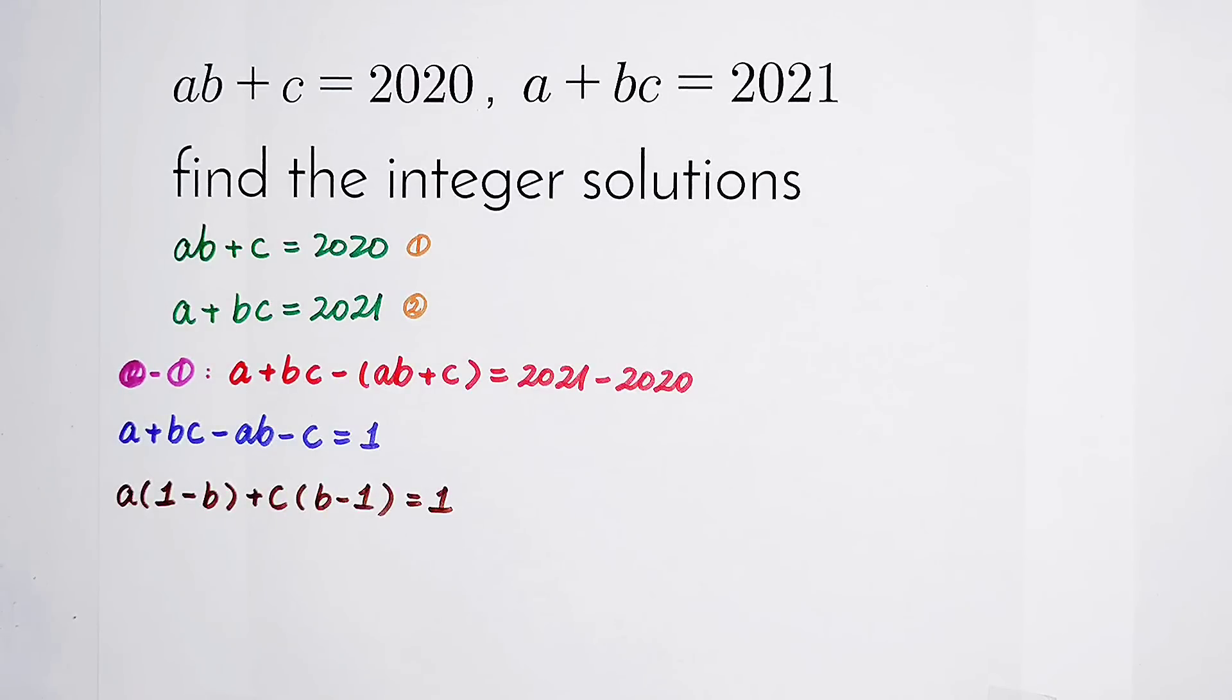Now, can we continue factoring the left-hand side? Maybe we can, but now we cannot. Because we have a problem here. Because 1 minus B and B minus 1, they are not the same.